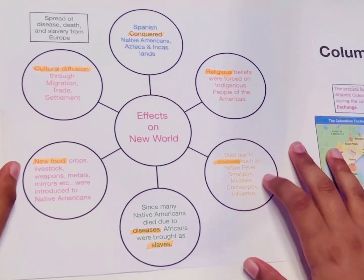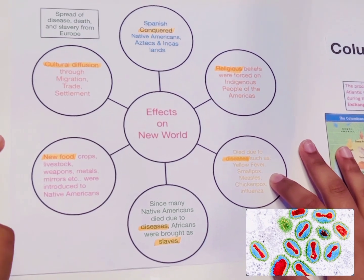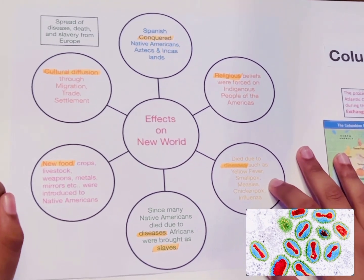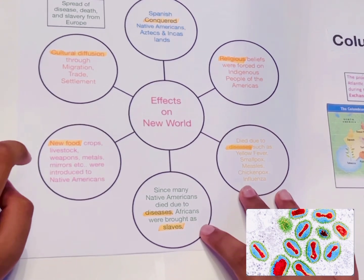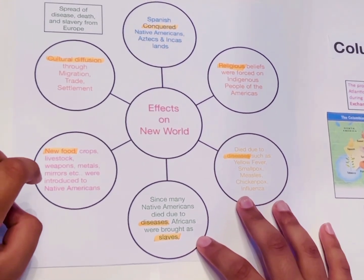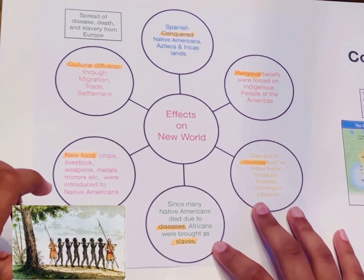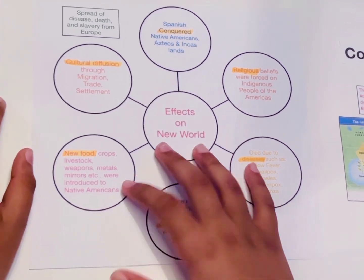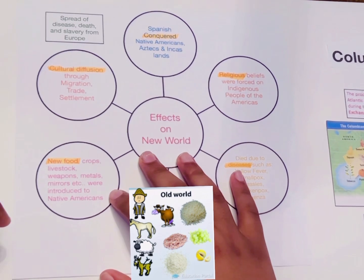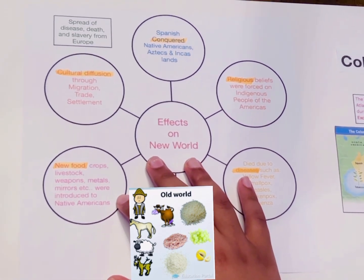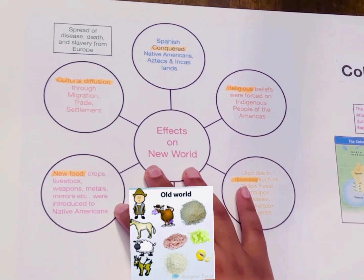Next, lots of people died due to diseases like yellow fever, smallpox, measles, chickenpox, and influenza. And since many Native Americans died due to diseases, Africans were brought as replacements for slaves. The Europeans also brought lots of food, crops, livestock, weapons, mirrors, etc. These were all new to the Native Americans.